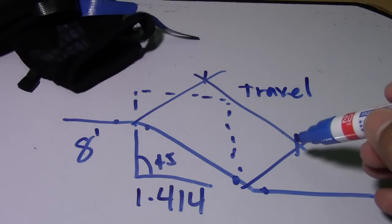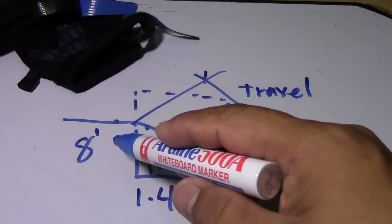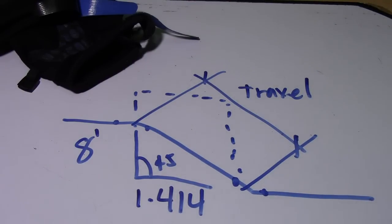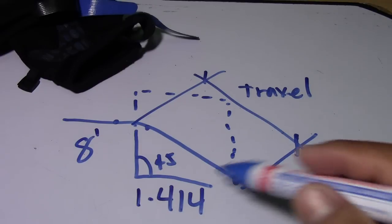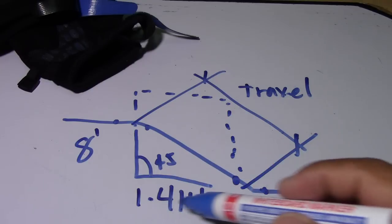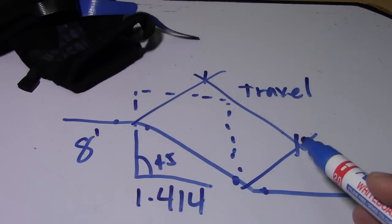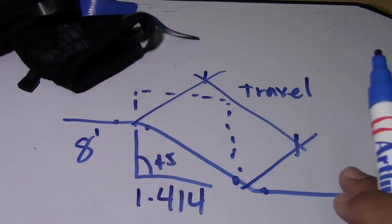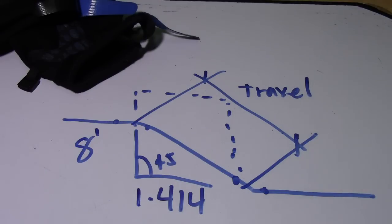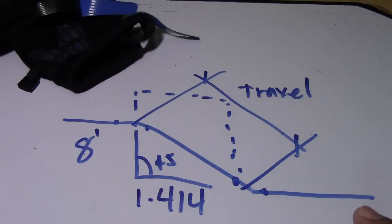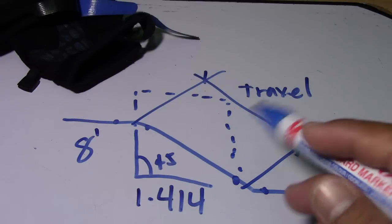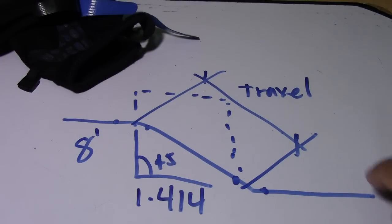For the secant — for 45 degrees, the secant and cosecant are the same: 1.414. We have 30 degrees, 15 degrees, and 9 degrees. I will show you the different multipliers for those other degrees. For 45 degrees this is 1.414.